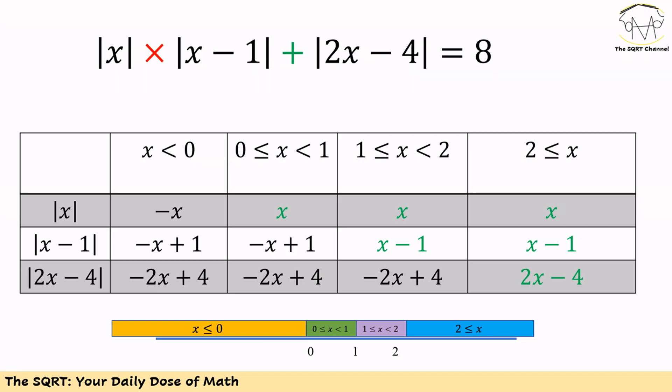For |2x - 4|, it equals -2x + 4 in the first three regions, and 2x - 4 in the last region.